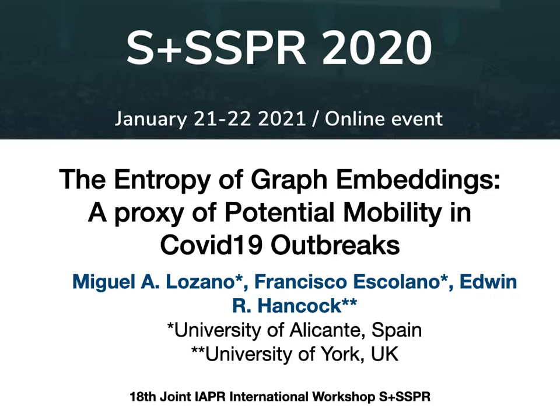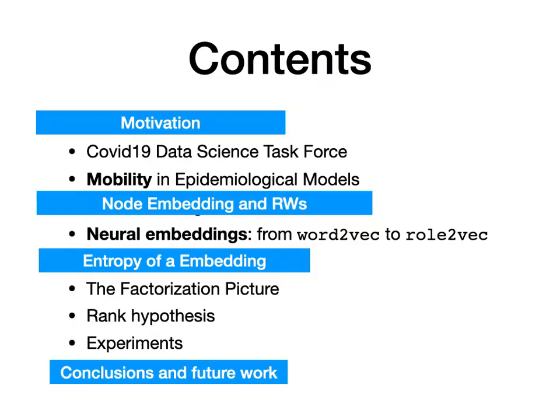This work is in collaboration with the University of Alicante and University of York. This work is part of a team called the COVID-19 Data Science Task Force, which was developed by the government of the region of Spain called the Comunidad Valenciana. The idea is that we analyzed the mobility graphs because they play a fundamental role in the spread of the disease. We found that if we embed these graphs and calculate some measure of complexity of these embeddings, then we can find a proxy or early warning of the reproduction number of the disease.